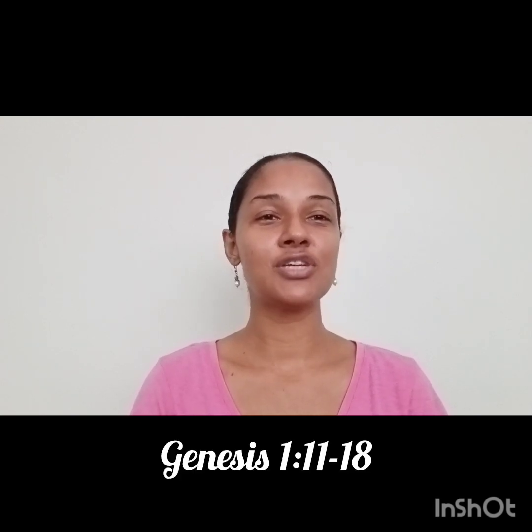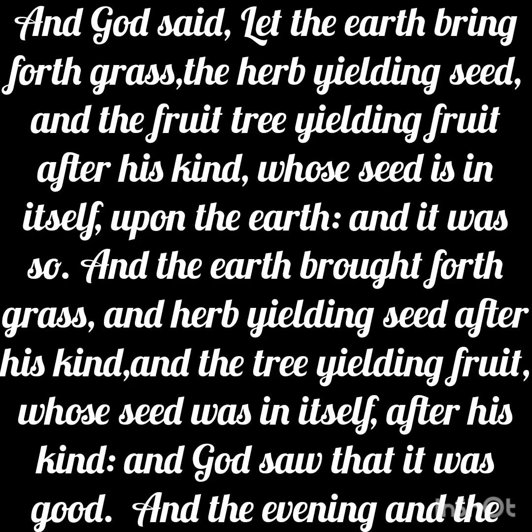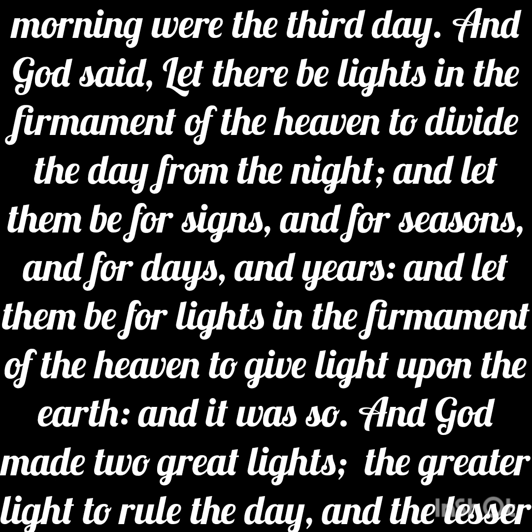Genesis chapter 1 verses 11 to 18 actually outlines the structure he has for us and it says: And God said, let the earth bring forth grass, the herb yielding seed, and the fruit tree yielding fruit after his kind, whose seed is in itself upon the earth, and it was so. And the earth brought forth grass, and herb yielding seed after his kind, and the tree yielding fruit, whose seed was in itself after his kind. And God saw that it was good, and the evening and the morning were the third day.